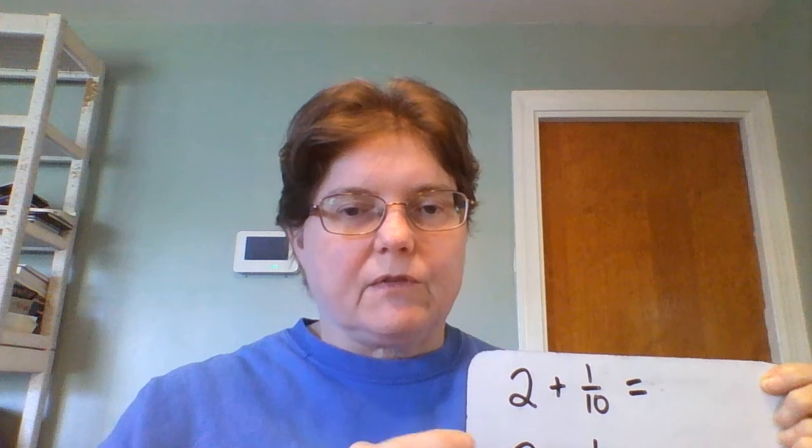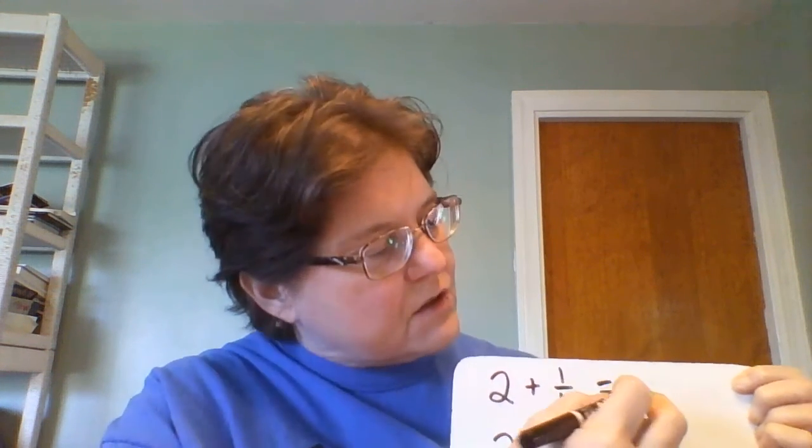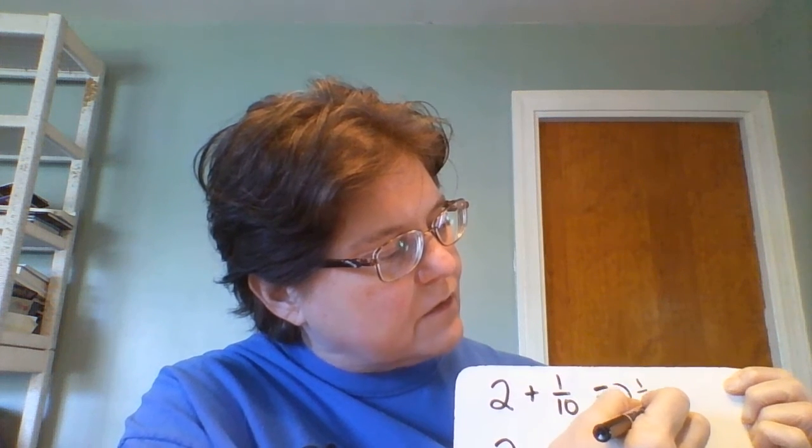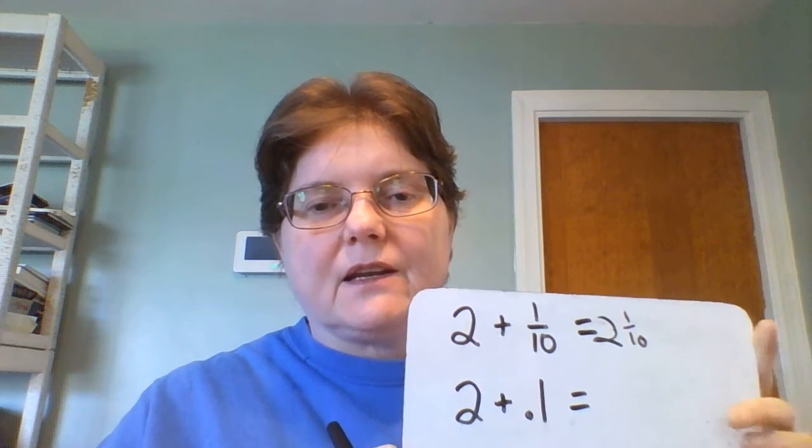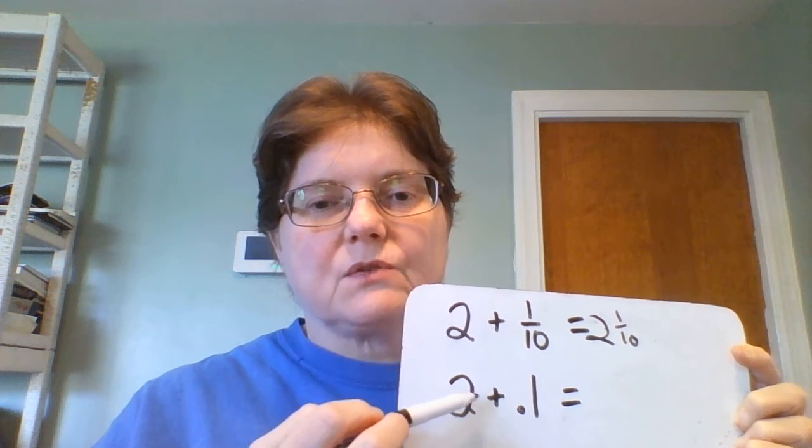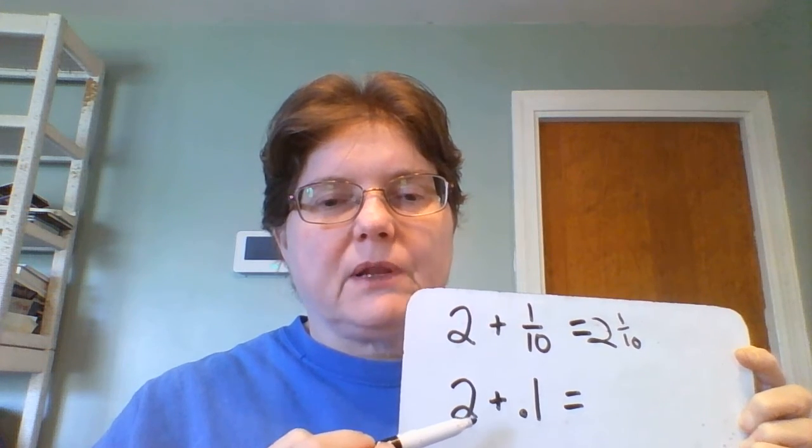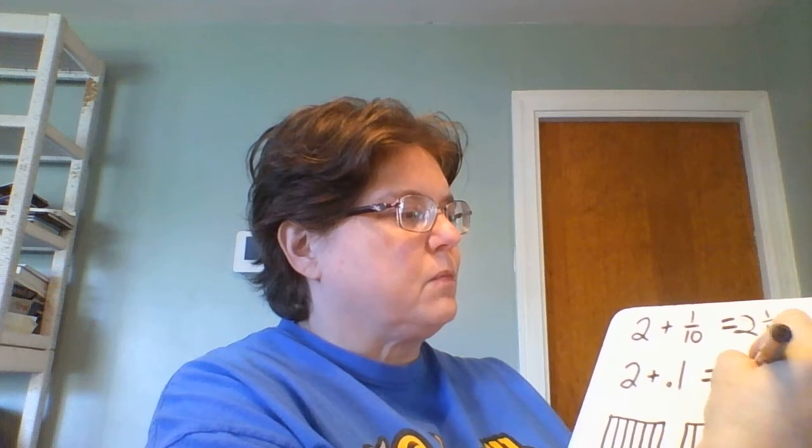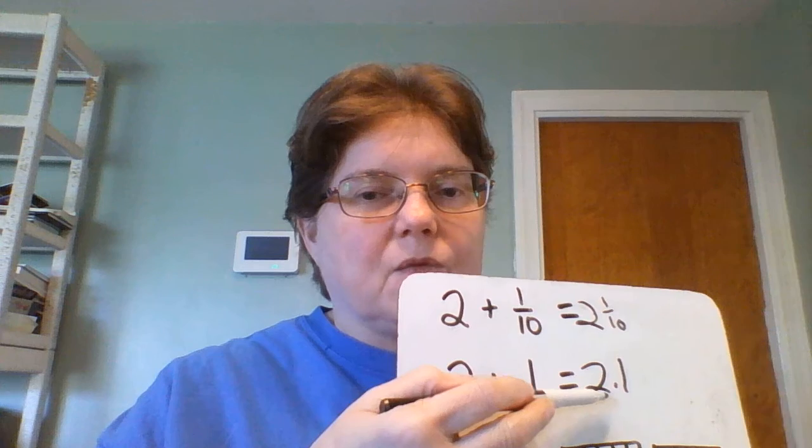The first thing I want to review is if we have 2 plus 1 tenth that's going to equal 2 and 1 tenth written like that. We can write it in a decimal because we know that 1 tenth equals 0.1. So 2 plus 0.1 equals 2.1 which we read as 2 and 1 tenth.